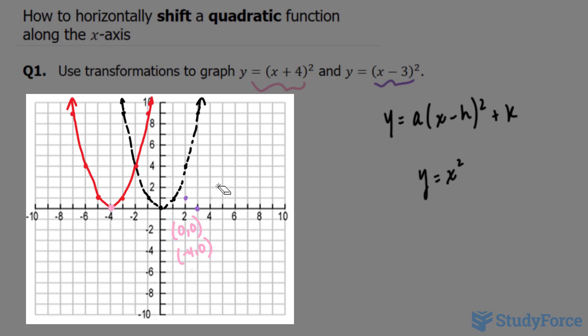I'll just erase this so you can see it better. This point will be shifted 3 to the right, and this point will be shifted 3 to the right. You should end up with a parabola that looks like this. This even has a y-intercept at (0, 9).